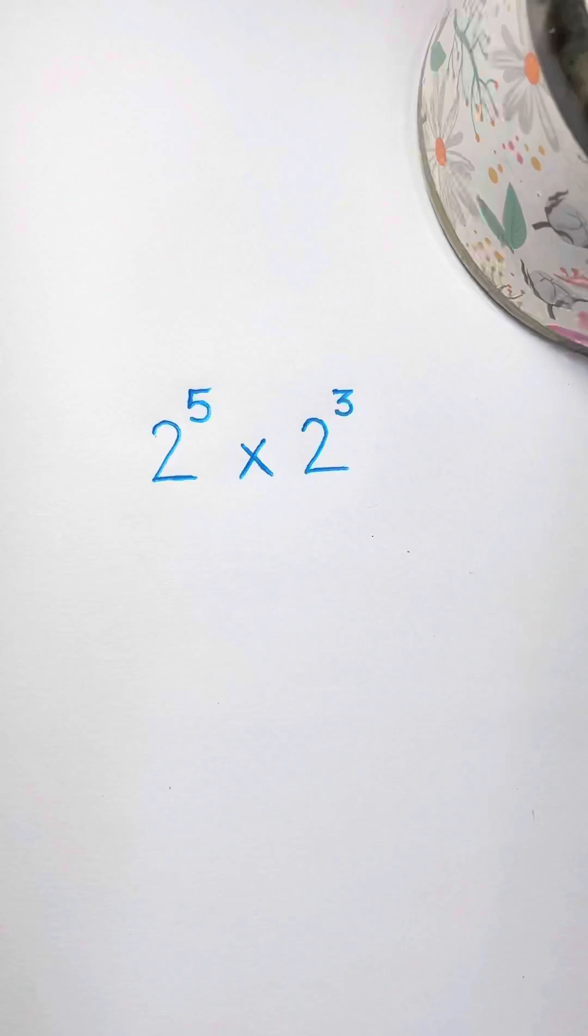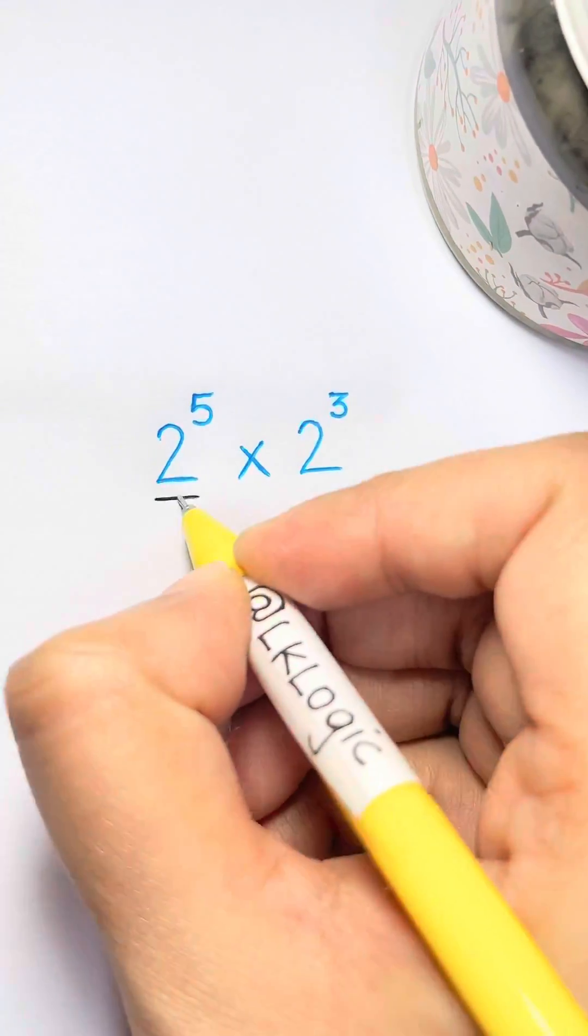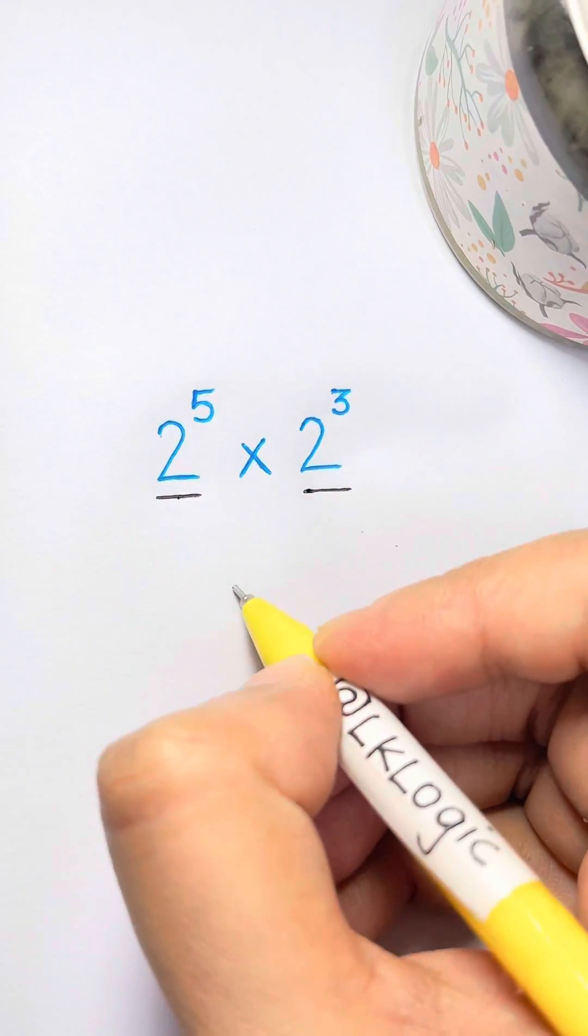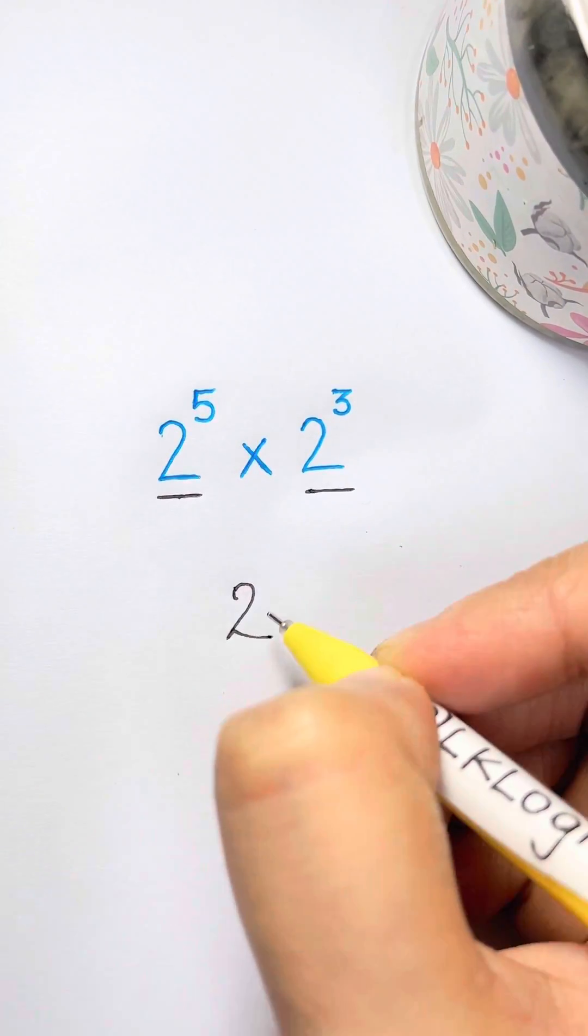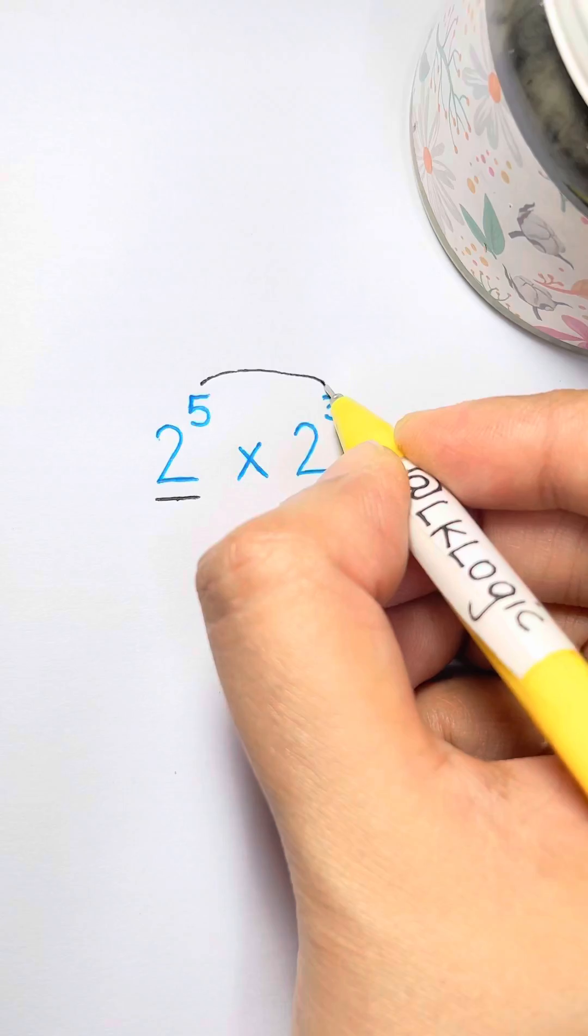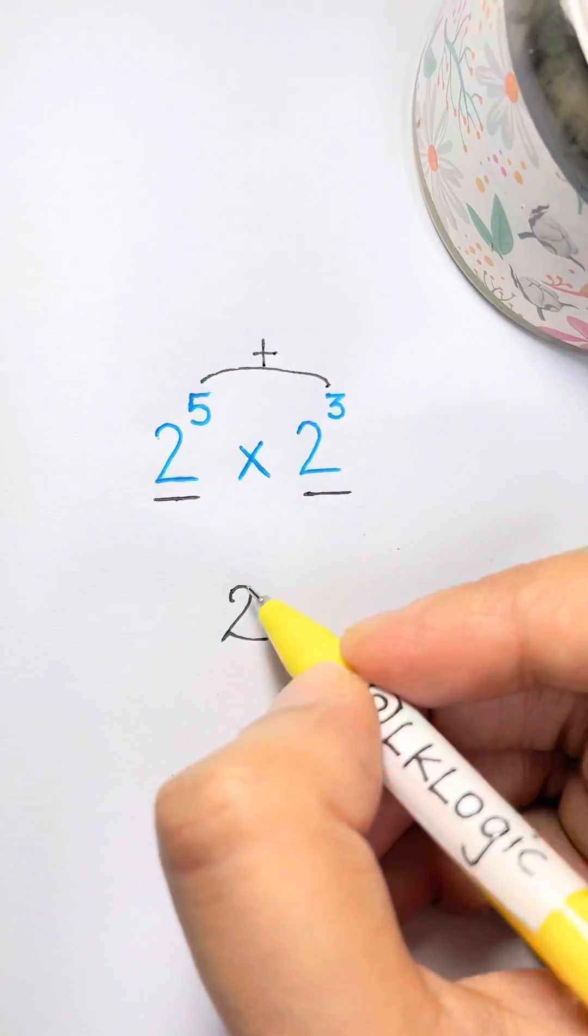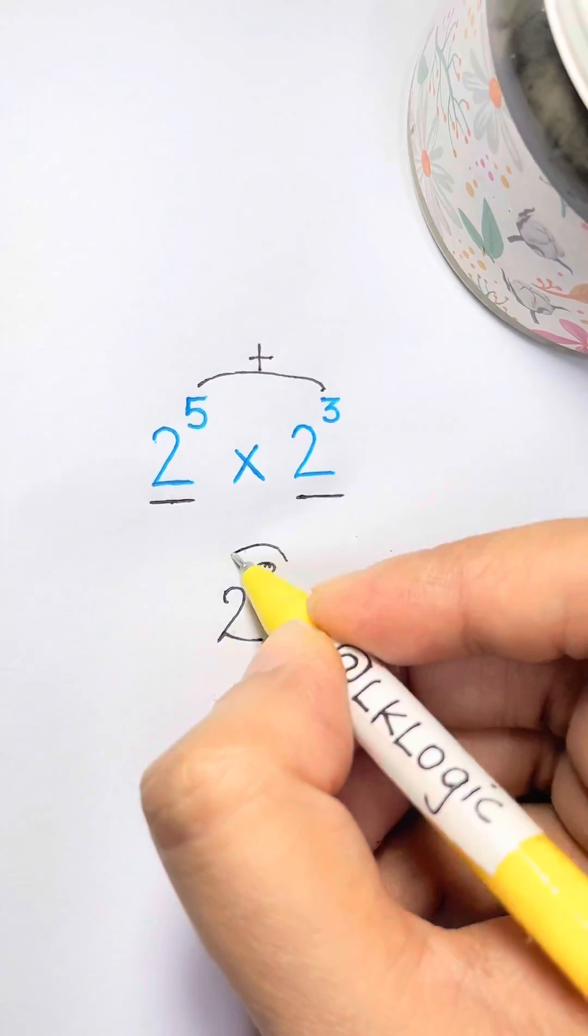Cool! When you multiply powers, take a look at your bases. If they are the same, copy it over to your answer and then take your exponents and add them. So 5 plus 3 is 8 and 2 to the power of 8 will be your answer.